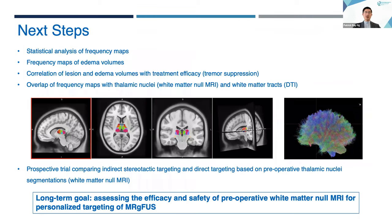Our next steps include statistical analysis of our frequency maps, frequency maps of edema, correlations of lesion and edema volumes with treatment efficacy, and overlaps of our frequency maps with thalamic nuclei segmentations and white matter tracks to confirm which structures are involved in adverse events and positive outcomes. Our group is also planning a prospective trial comparing indirect stereotactic targeting and direct targeting based on preoperative thalamic nuclei segmentations. This trial will inform our long-term goal of assessing the safety and efficacy of preoperative white matter MRI for personalized FUS targeting.